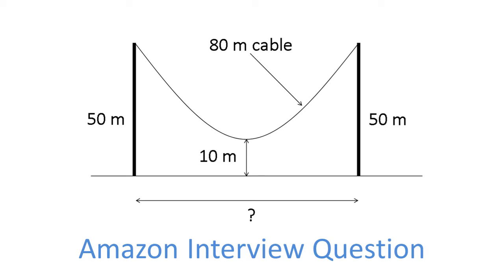In this video we're going to look at a quick maths problem that was given as part of an Amazon interview. We've got two poles, they're both 50 metres tall, an 80 metre cable is strung between them and its lowest point is 10 metres above the ground. We need to work out how far apart the poles are.